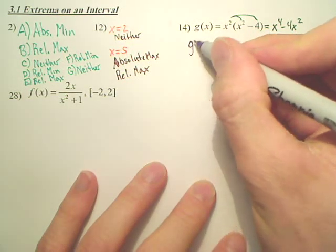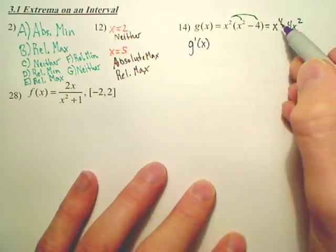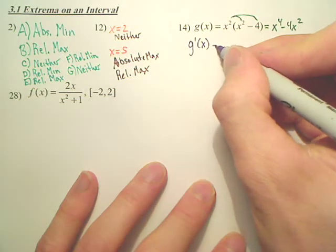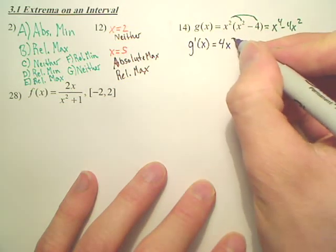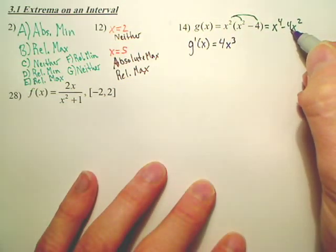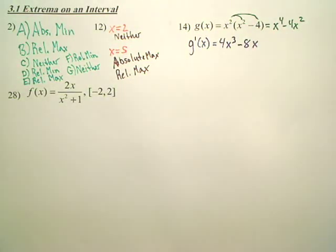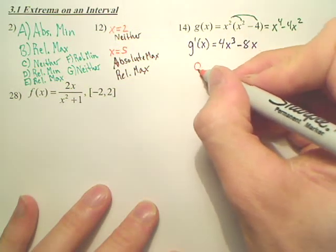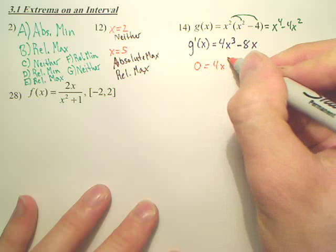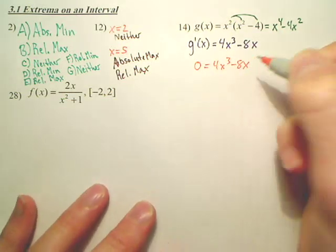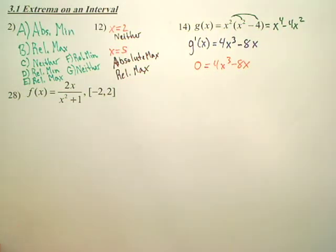So g'(x), derivative of x^4 is pretty easy, 4x^3. And derivative of -4x^2 is -8x. So to find critical numbers, you just set that equal to zero.